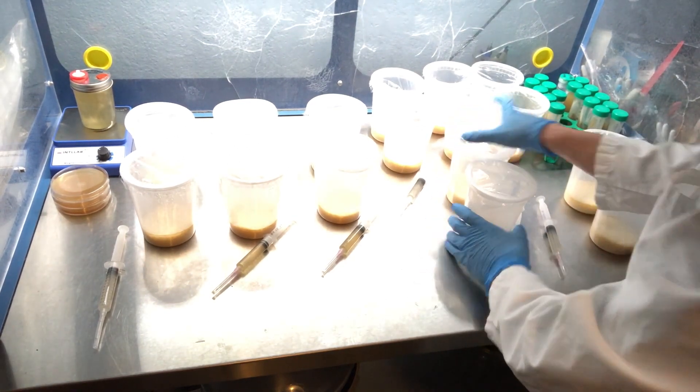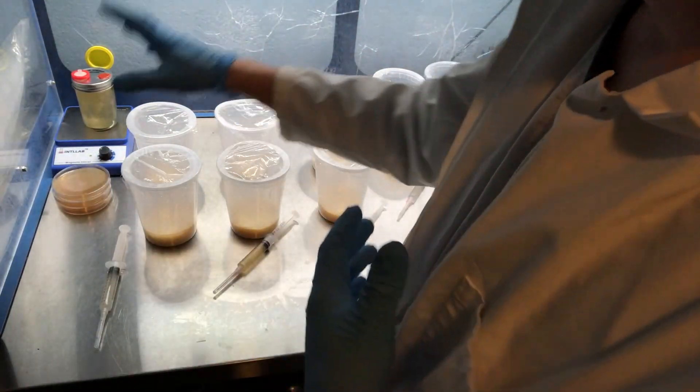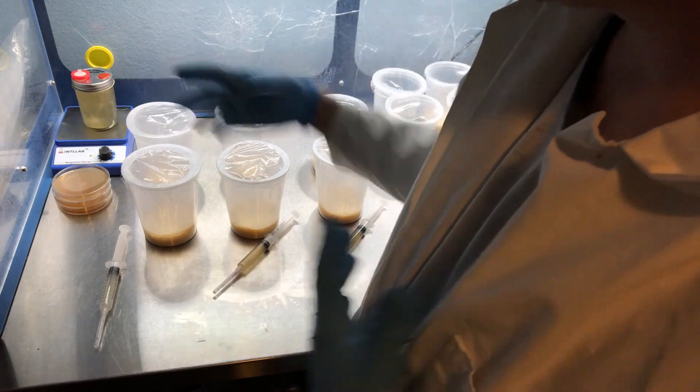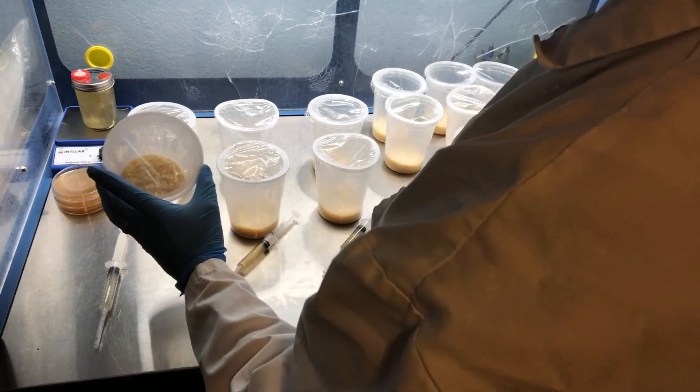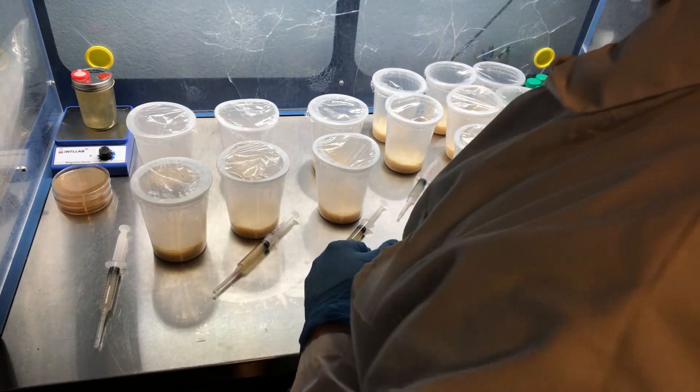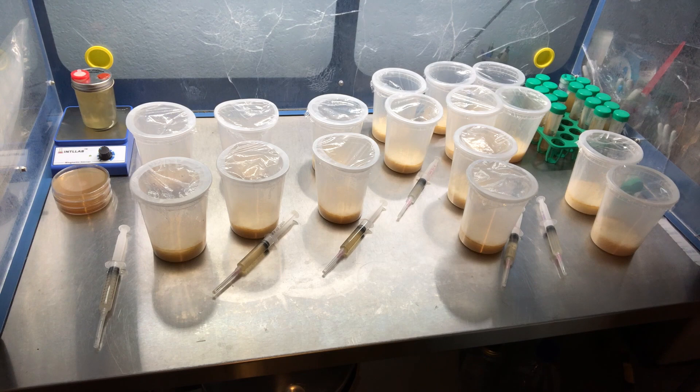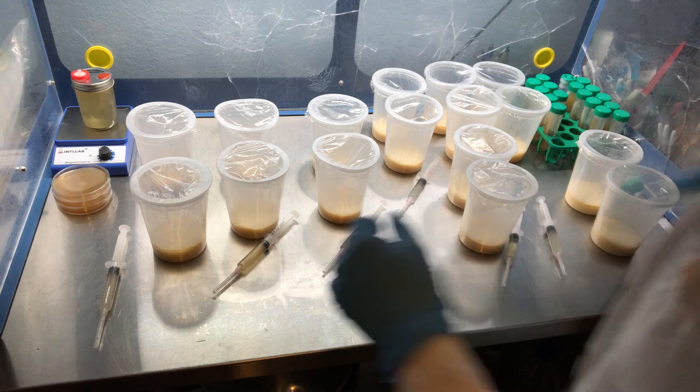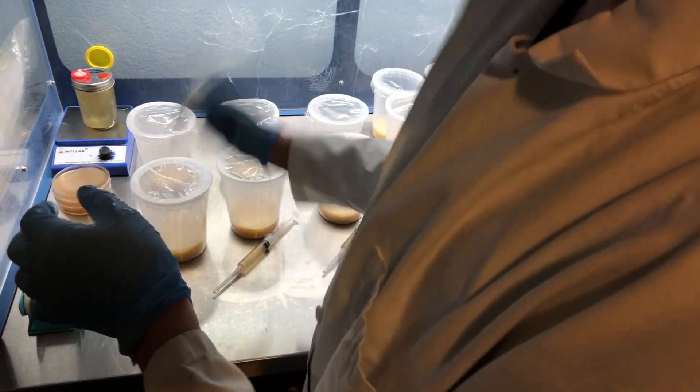You can see that these lids that I made, all I did was take saran wrap, the cling wrap, and then I parafilmed the edge so that it would stay on. I really like these because you can see through them and you can watch the colonization. But once I get the process down it won't be as much of an issue. I'm just going to also grab my micropore tape and I will start with the Terrestrial Fungi.